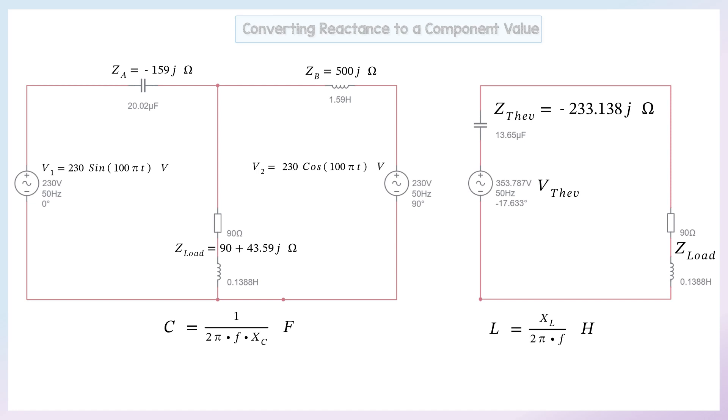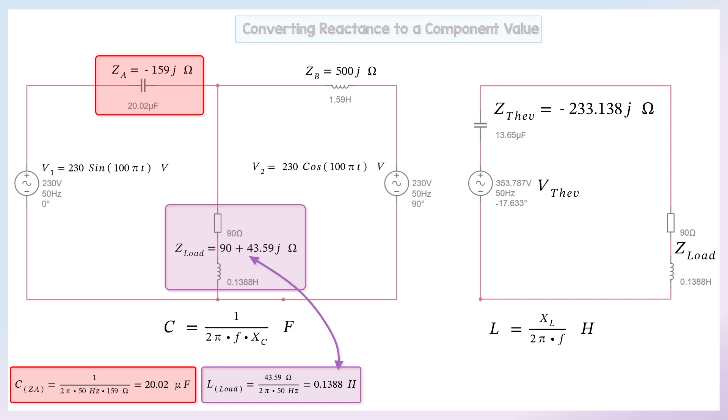So ZA, which is minus 159 J, because it's negative, it's definitely a capacitor, and it comes out as roughly 20 microfarads. Then to get that inductive reactance of the opposite side from earlier, 43.59 J, that was a 0.1388 Henry. And you just keep doing this for all of the reactive components, to find out what value to put in the circuit to simulate.